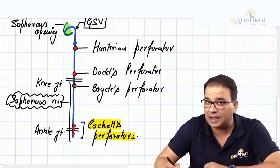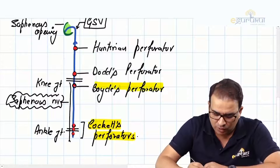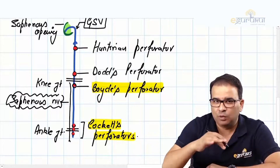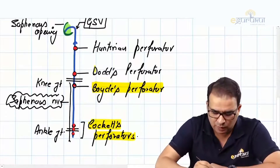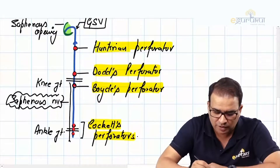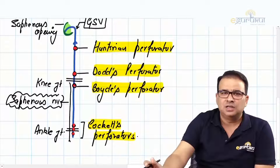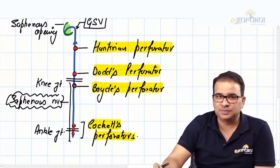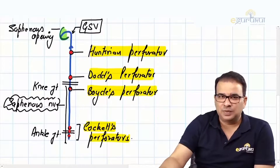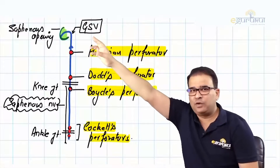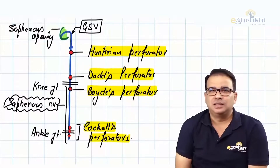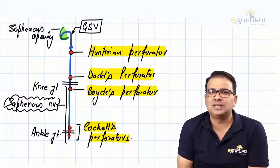Remember: Cockett's perforators at the ankle, Boyd's perforators below the knee, Dodd's perforators above the knee, and Hunterian perforators in the mid-thigh region - obviously at the site of the Hunterian canal. These are the perforators. The great saphenous vein, once it goes through the cribriform fascia in the saphenous opening, ultimately drains into the femoral vein.